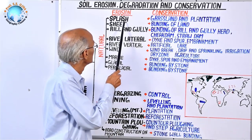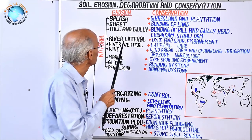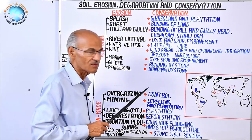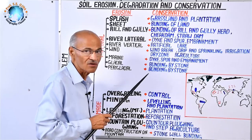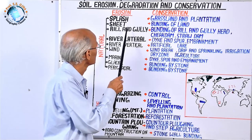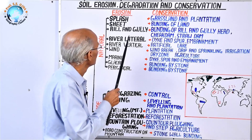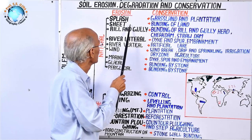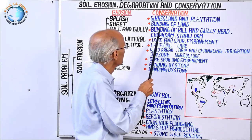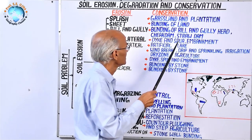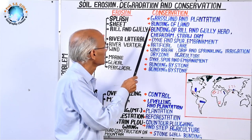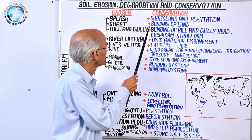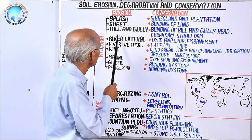The second type is sheet erosion. When small drops fall from the atmosphere and the ground becomes saturated, water starts flowing in a sheet and carries down soluble minerals of soil like calcium, potassium, and magnesium, making the soil infertile. For conserving soil from sheet erosion, the bunding of land has been designed. That's why farmers make demarcations around their agricultural farmlands.